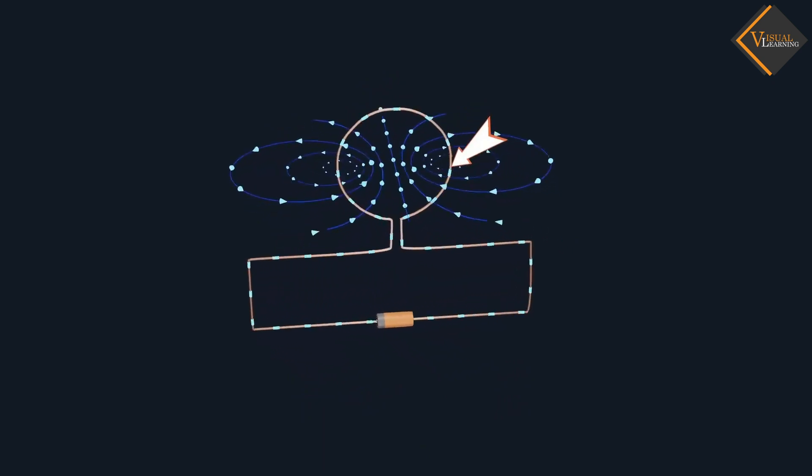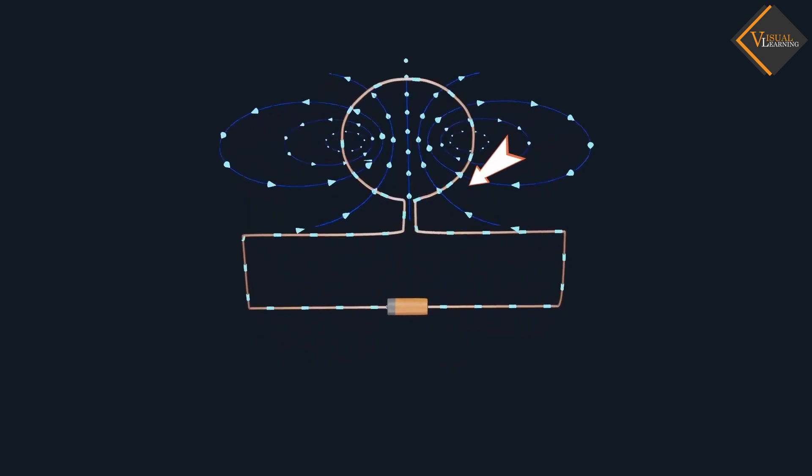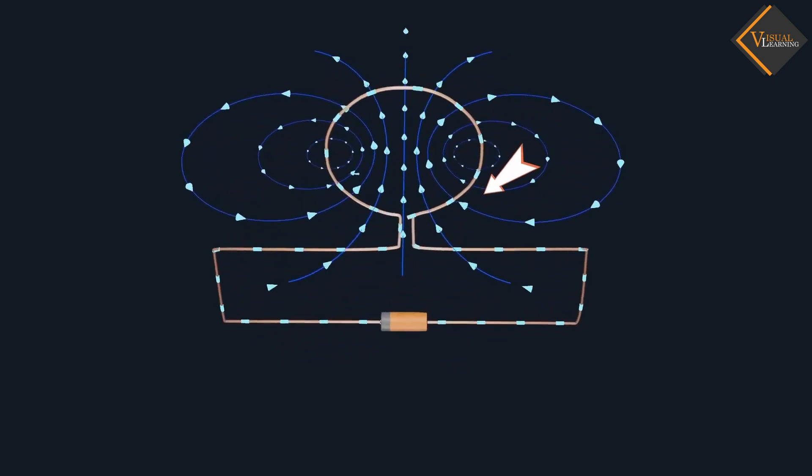At every point of a current carrying circular loop, the concentric circles represent the magnetic field around it.